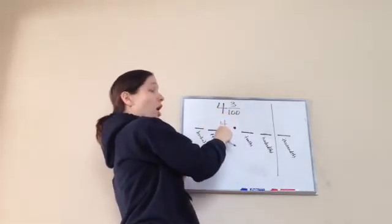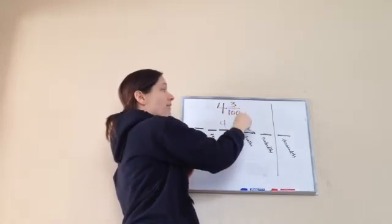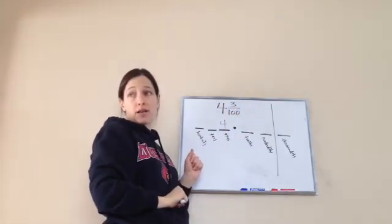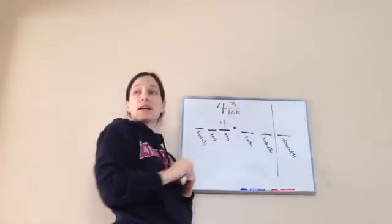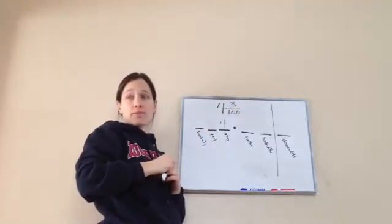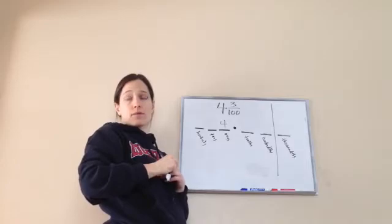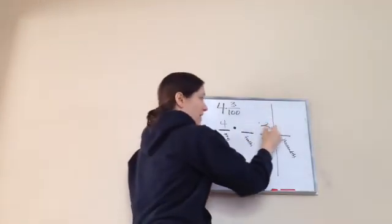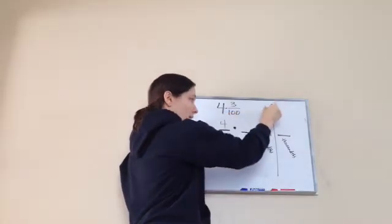Now, so I have four whole pies, and three out of a hundred, three hundredths of another pie. Where would that three out of the hundredths go? In the hundredth spot. Yes, because that's where it ends. Hundred is where my number ends.